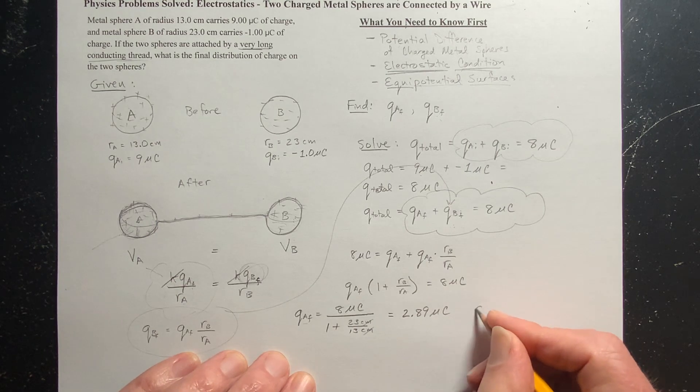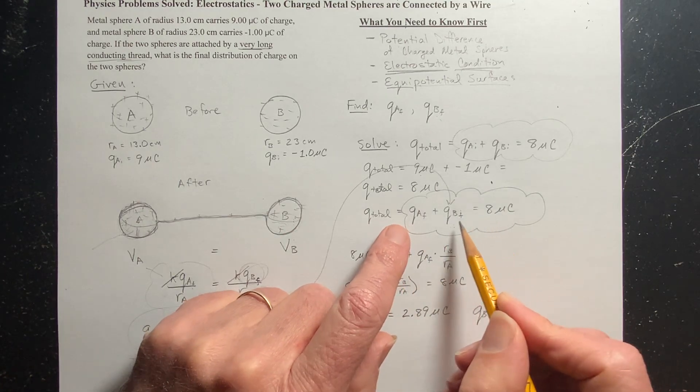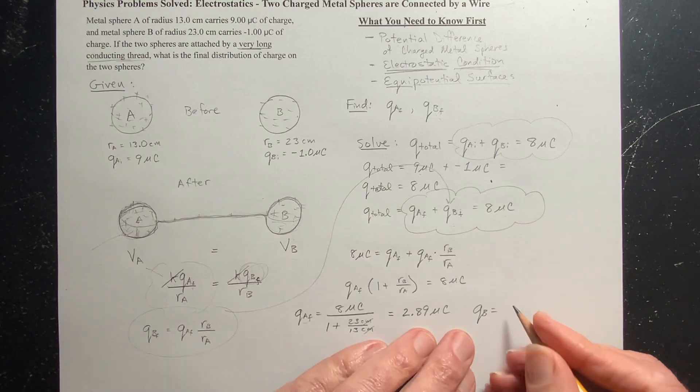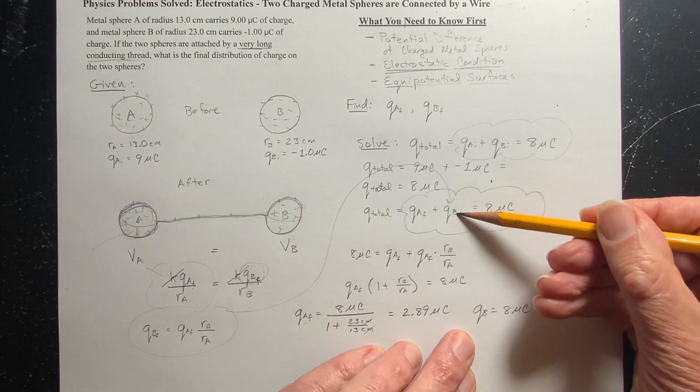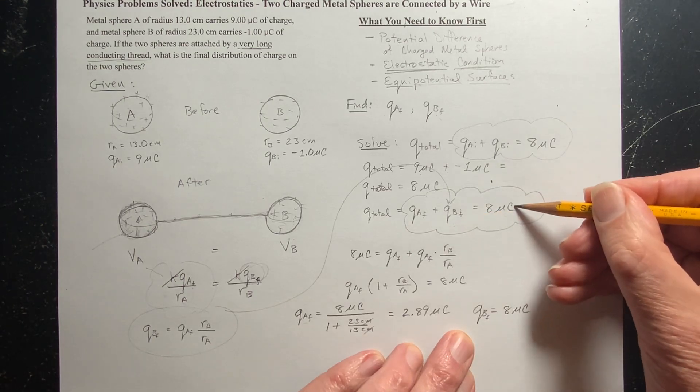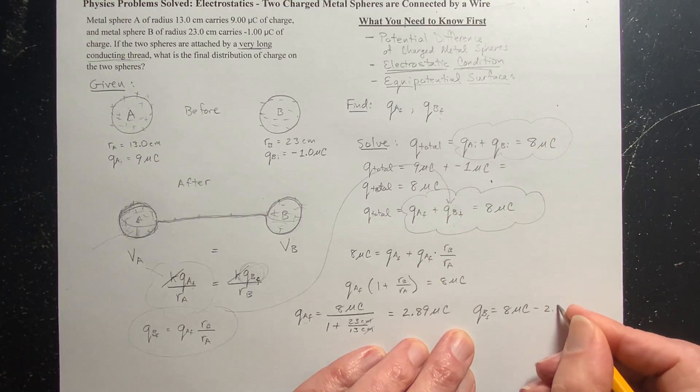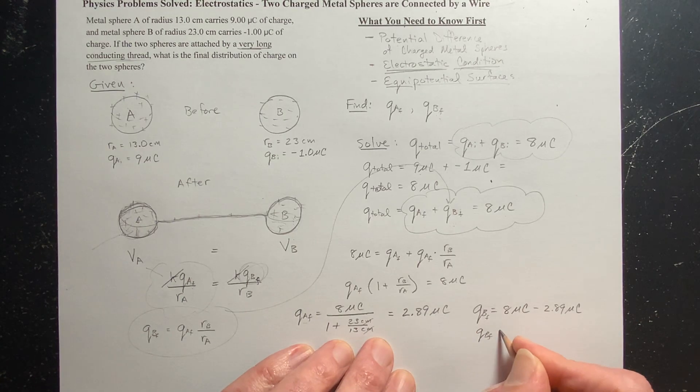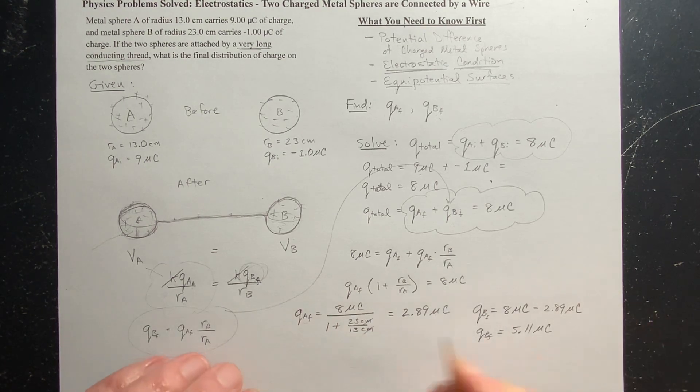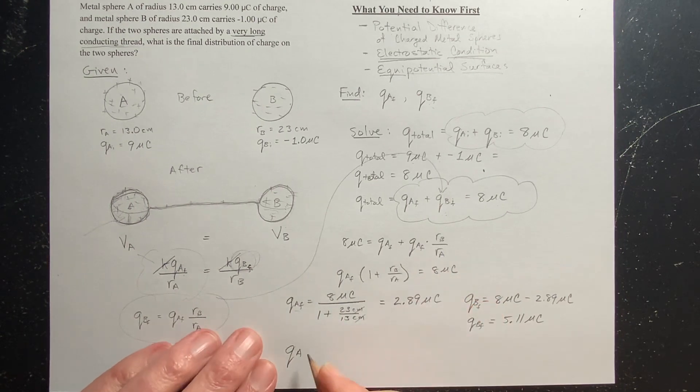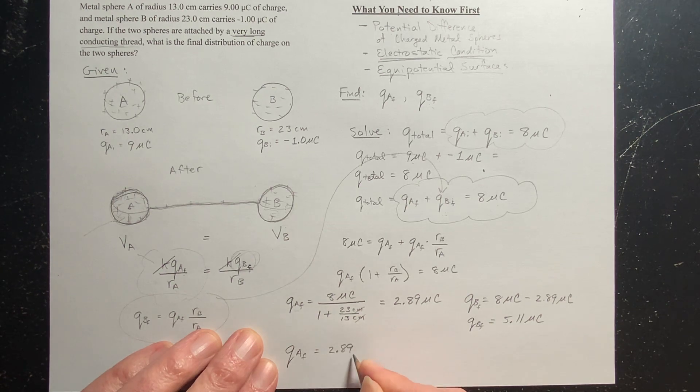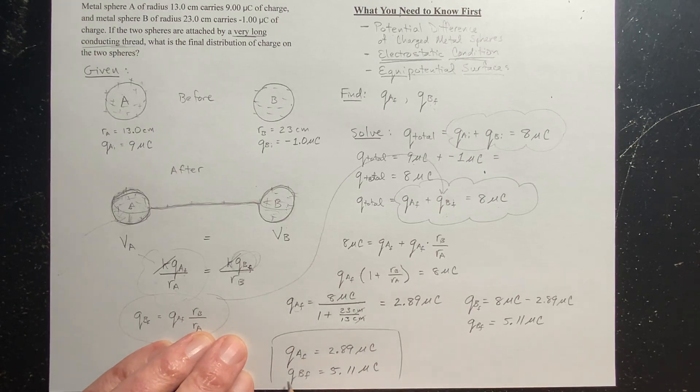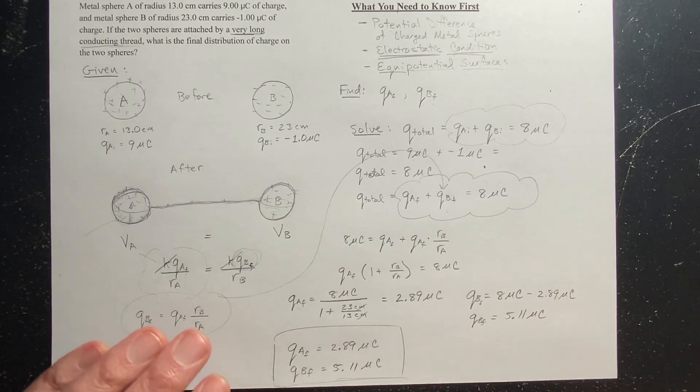Now QB is going to be equal to the total charge minus QA. So that's going to be 8 microcoulombs minus 2.89 microcoulombs. And so QB final is equal to 5.11 microcoulombs. So let's just say our answer here. QA final is 2.89 microcoulombs and QB final is 5.11 microcoulombs. And there's our answer.